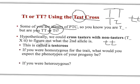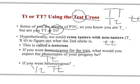In other words, if you're homozygous for this trait, you would expect all of your progeny to be tasters. And if you were heterozygous, half your progeny would be tasters and half would not.